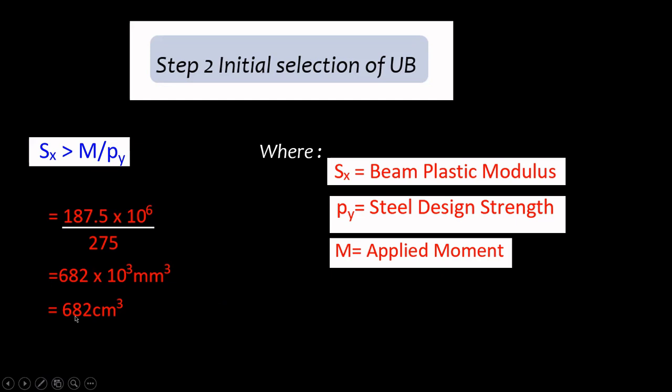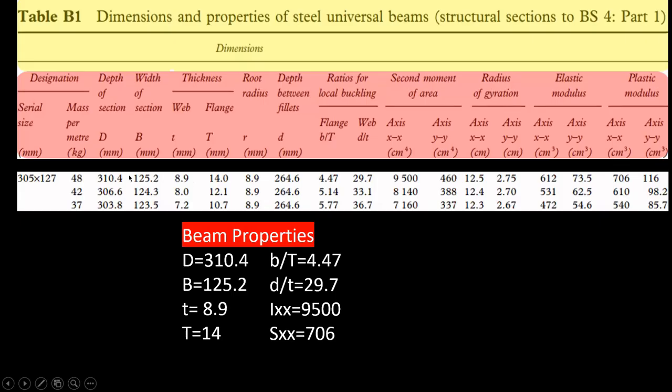So now we move to the steel tables and we get a value that is higher than this. A value that is higher. Remember, SX should be greater than M divided by PY. So if you go to the steel table, I checked the value that is slightly higher is this section of the beam 305×127×48 universal beam. And these are the properties.